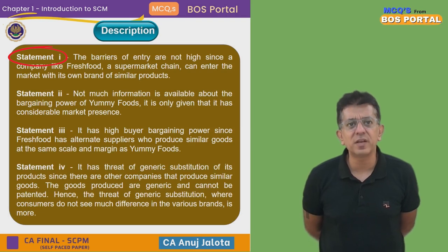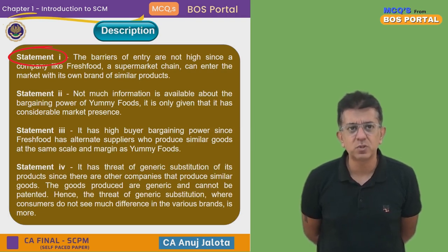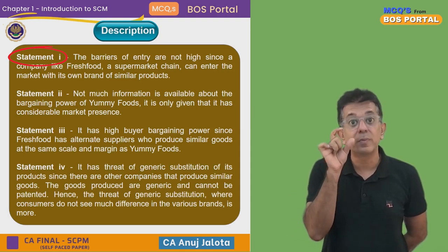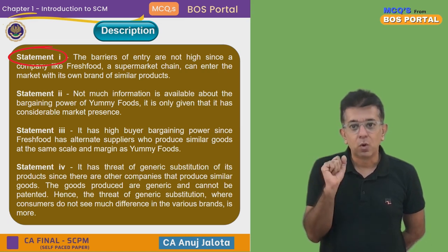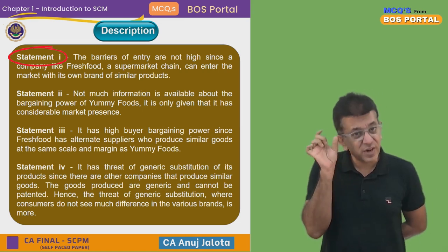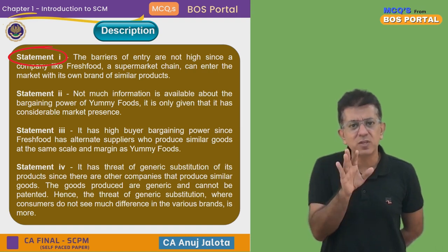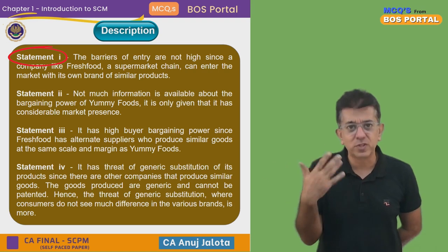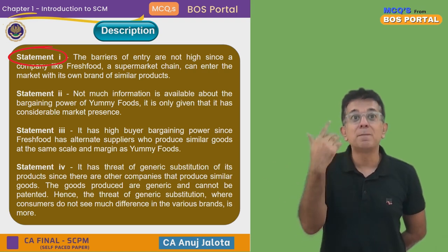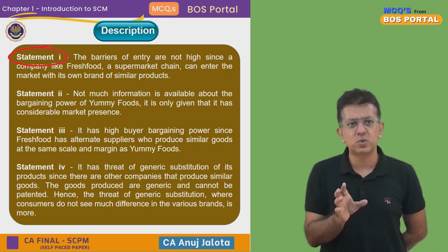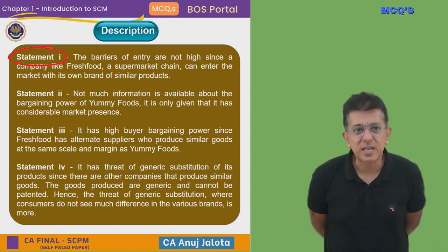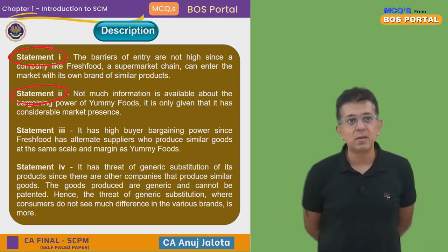Statement one: barriers to entry are not high since a company like Fresh Foods — a supermarket chain — can enter the market with its own brand of similar products. So there is no barrier to entry, and it is not stated that huge investment or patents are required. Statement two: not much information is given about the bargaining power of Yummy Foods' suppliers; it is only stated that it has considerable market presence, so supplier bargaining power cannot be commented on.